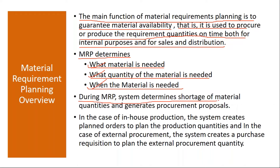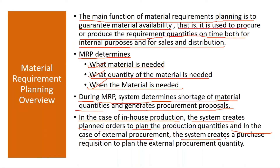During MRP, the system determines the shortage of material quantities and generates a procurement proposal. In the case of in-house production, the system creates planned orders to plan the production quantities. In the case of external procurement, the system creates purchase requisitions to plan the external procurement quantity. Normally when you run MRP, you will get either planned orders or purchase requisitions.